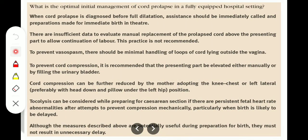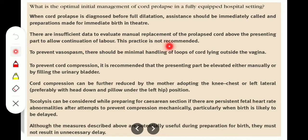What is the optimal initial management of cord prolapse in a fully equipped hospital setting? When cord prolapse is diagnosed before full dilatation, assistance should be immediately called and preparation made for immediate birth in the theatre. There are insufficient data to evaluate manual replacement of the cord above the presenting part to allow continuation of labour — this practice is not recommended. To prevent vasospasm, there should be minimal handling of the loops of cord lying outside the vagina.